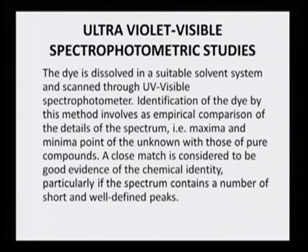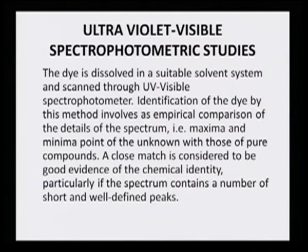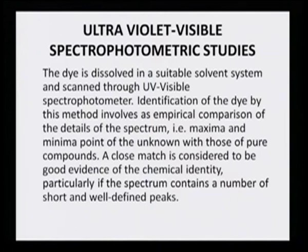Ultraviolet-visible spectrometric method — this will be covered in more detail because it is one of the quickest and most easily doable techniques to identify the dye molecule. A dye is dissolved in a suitable solvent system and scanned through a UV-visible spectrophotometer. Identification of the dye by this method involves an empirical comparison of the details of the spectrum — that is, the maxima and minima points of the unknown with those of the pure compounds.